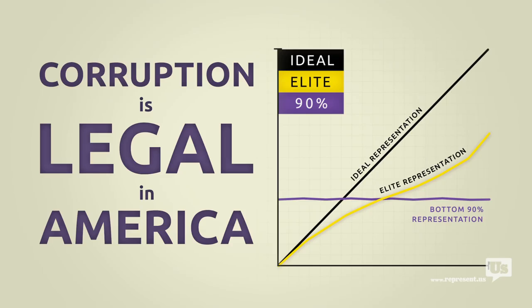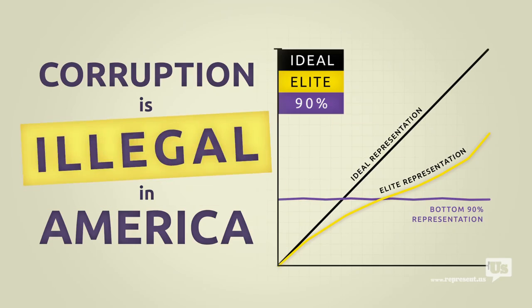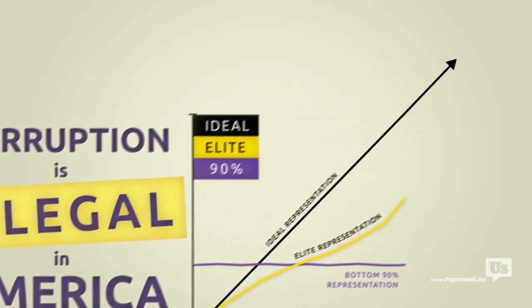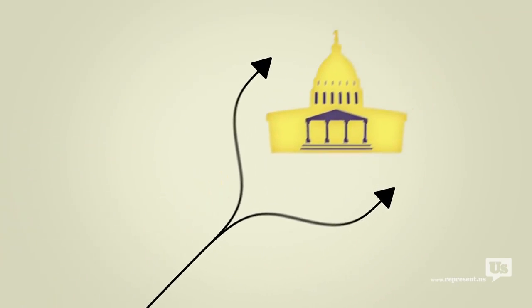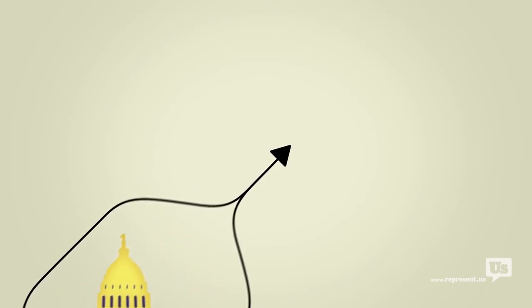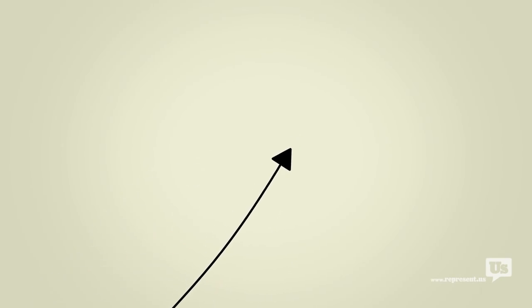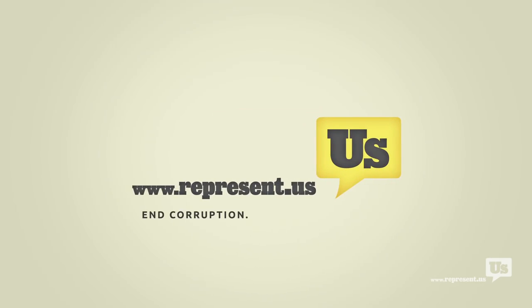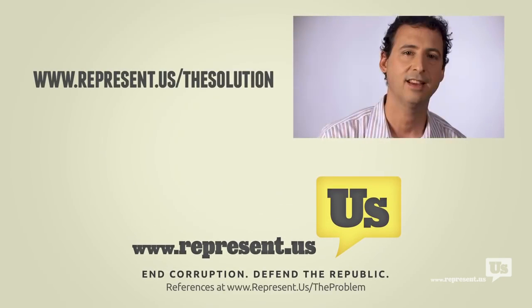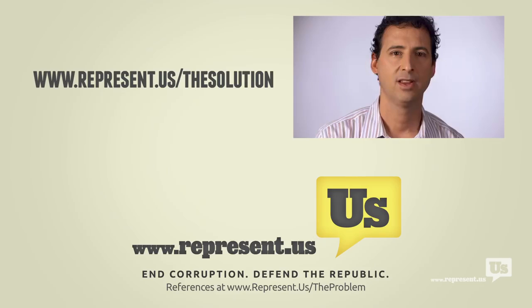The solution here isn't rocket science. Make corruption illegal. We already know Congress won't do it. I mean one look at this chart will tell you that. What we need is a plan that lets us go around Congress and do what the American people do best. Fix this mess ourselves. Well, good news. We have that plan and it's already working. Now that we've got the problem covered, let us show you how to be part of the solution.